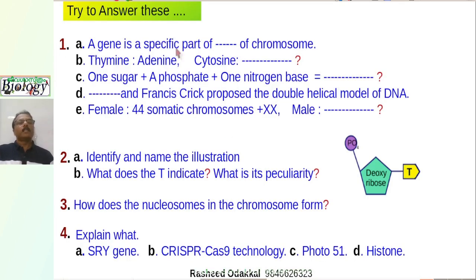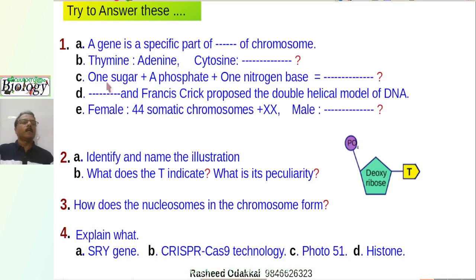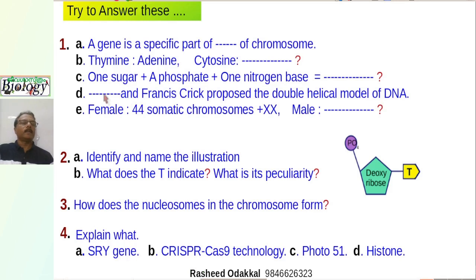First question: A gene is a specific part of DNA — deoxyribonucleic acid — of a chromosome. Thymine is paired with adenine. Cytosine is paired with guanine. One sugar, one phosphate, and one nitrogen base make up a nucleotide. Francis Crick and James Watson proposed the double helical model of DNA. Females have 44 somatic chromosomes plus XX, and males have 44 plus XY.